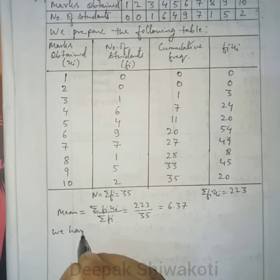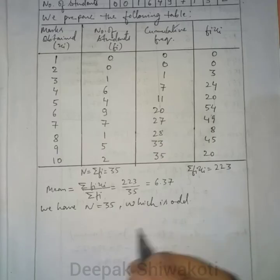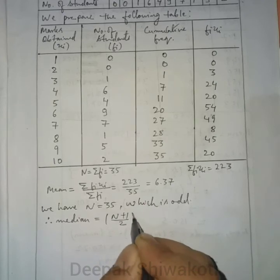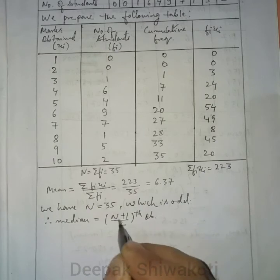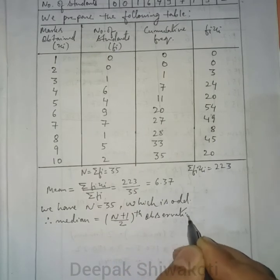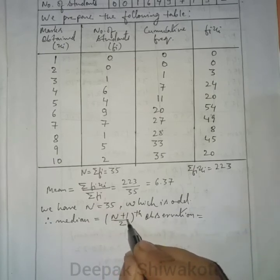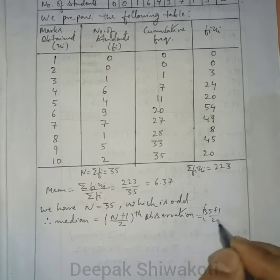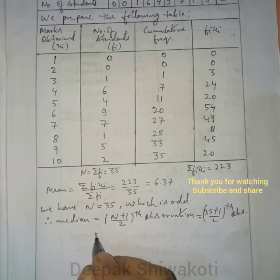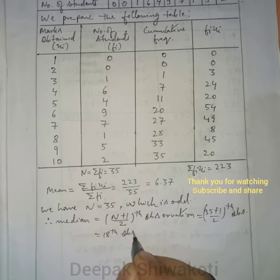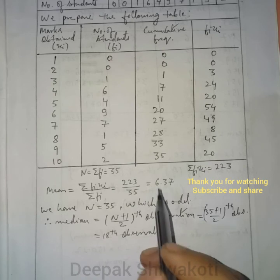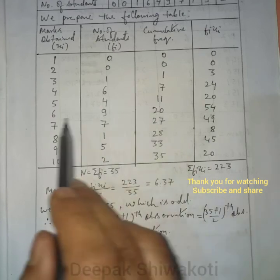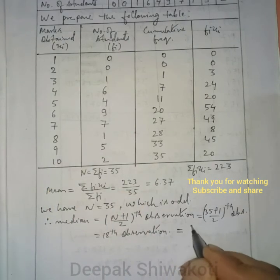Now n = 35, which is odd. For an odd number of observations, median = value of the (n+1)/2-th observation. Here, (35+1)/2 = 18. The 18th observation lies between cumulative frequencies 11 and 20, so its value is 6. Therefore, median = 6.